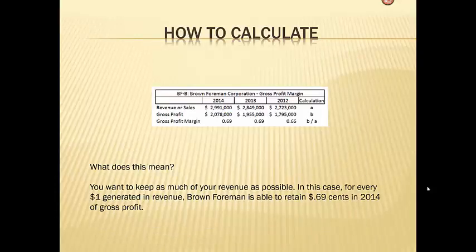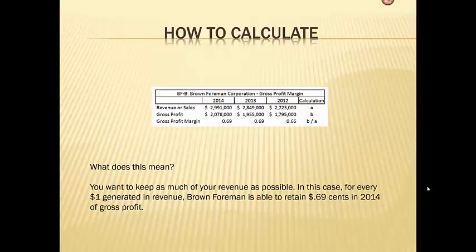Let's take a look at Brown Foreman's revenue and sales for three years: 2014, 2013, and 2012. You take the revenue or sales and divide that by the gross profit number. So for Brown Foreman in 2014, for every dollar that they generated in revenue, they were able to keep 69 cents of that dollar as gross profit.